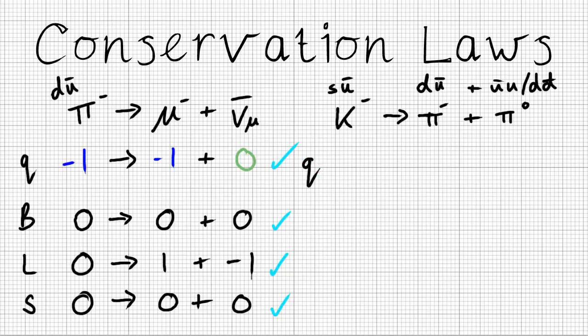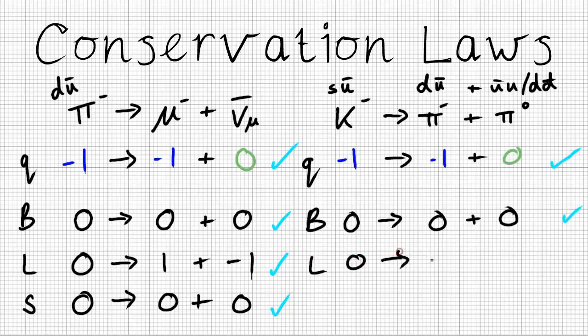So, firstly, charge. Once more, minus one. Decaying to a minus one plus a naught. So, we're alright. We charge. Next one, baryon numbers. Again, these are mesons. This is a meson. This is a meson. So, that's alright. Leptons. No leptons in this reaction at all. We are alright there.